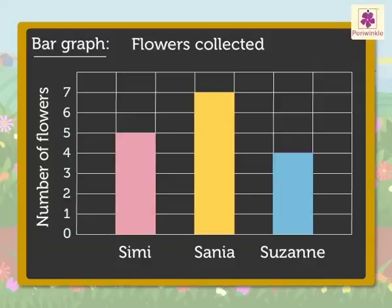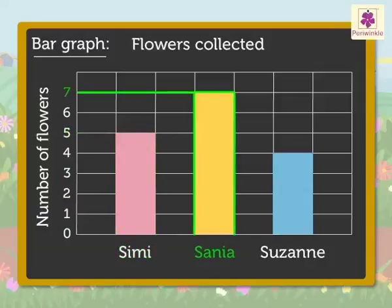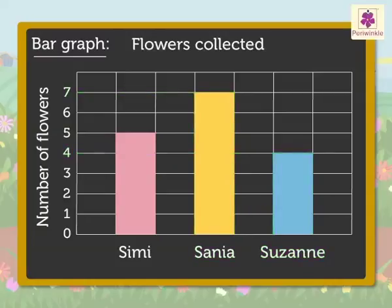Hence, from the bar graph we can say Simi collected five flowers, Sania collected seven flowers, and Suzanne collected four flowers.